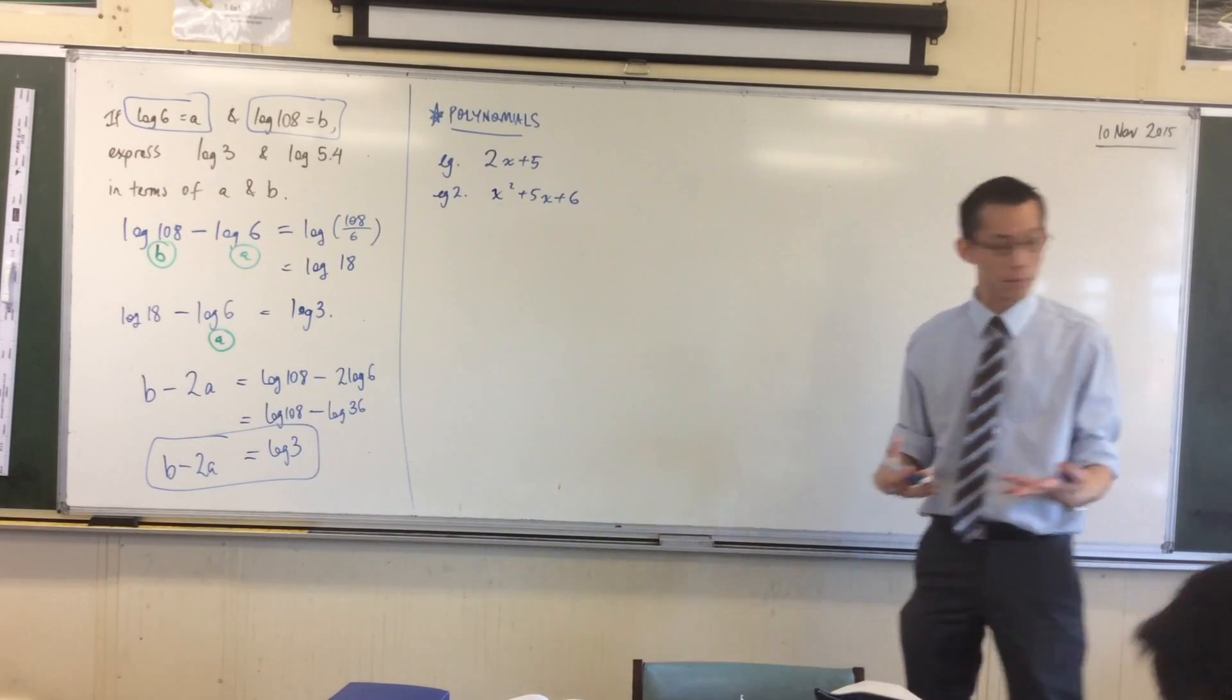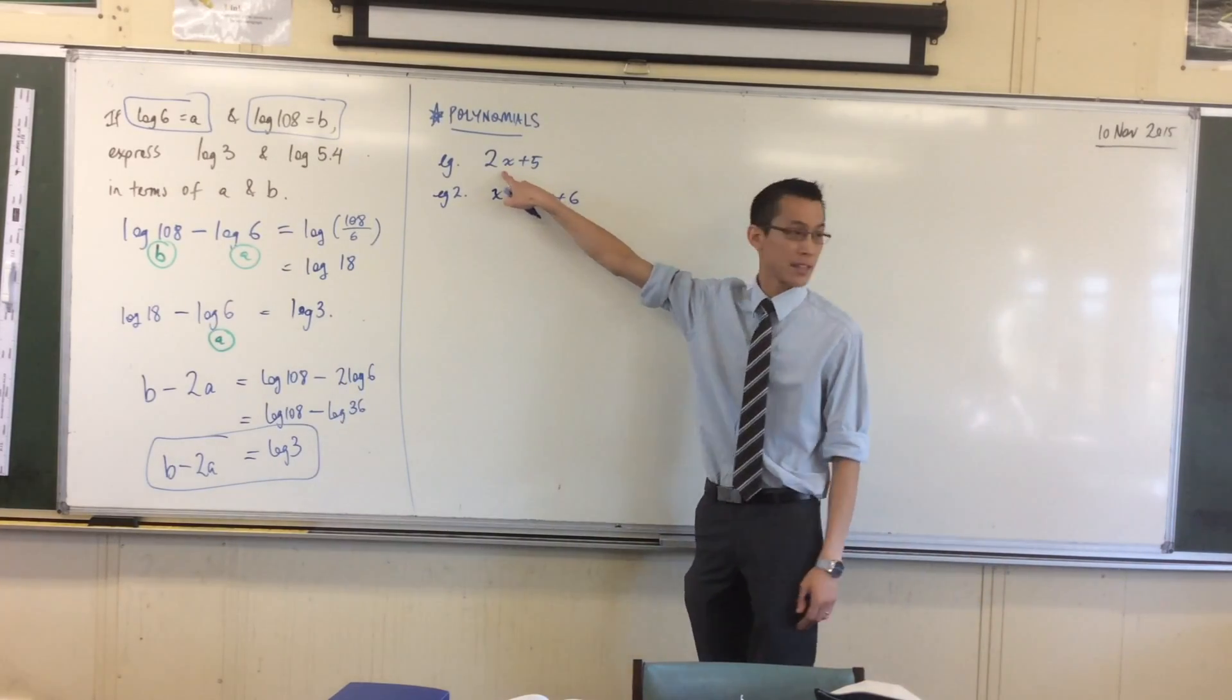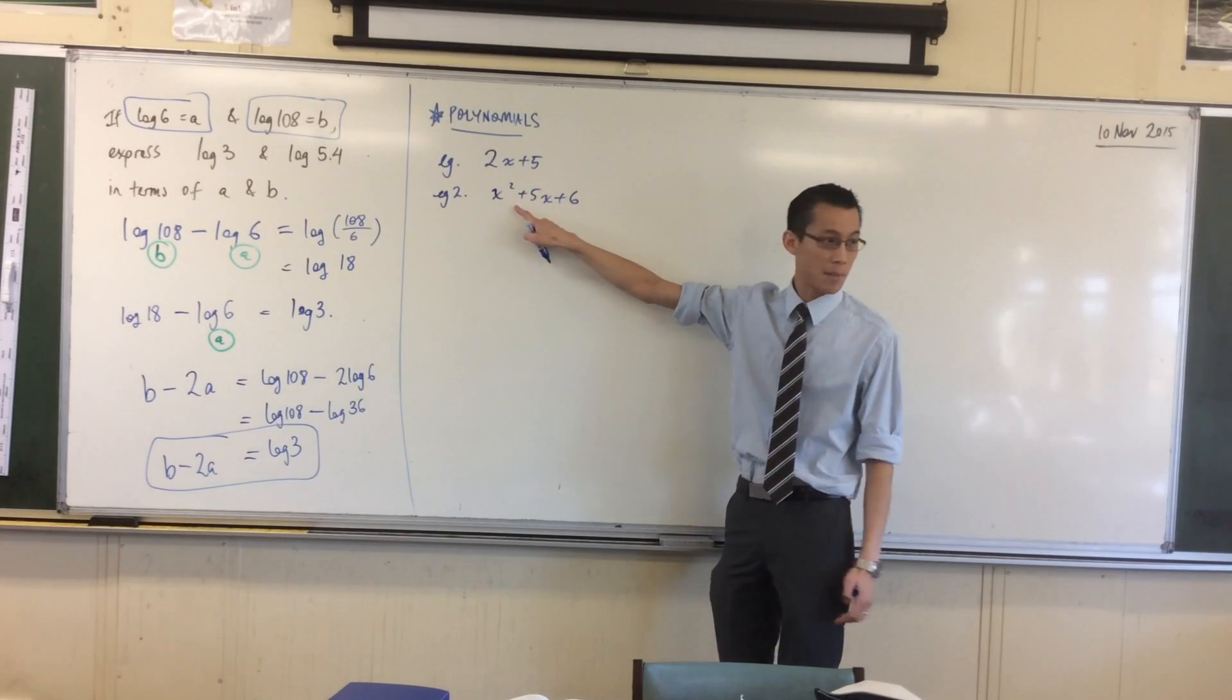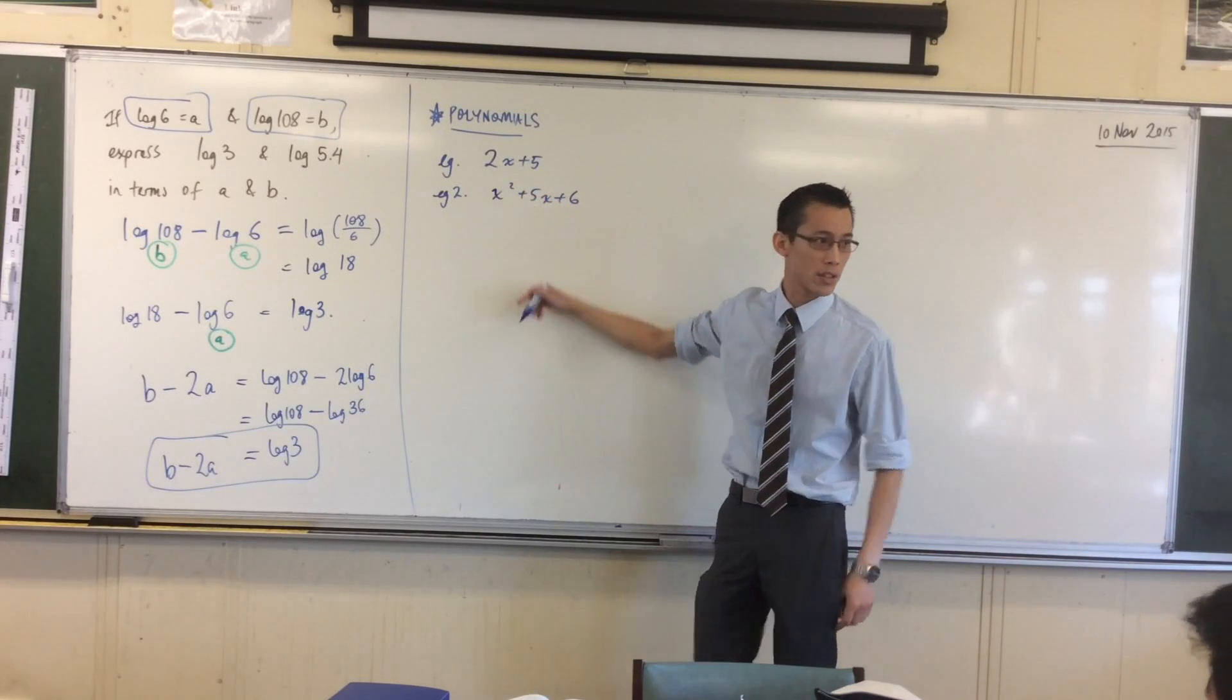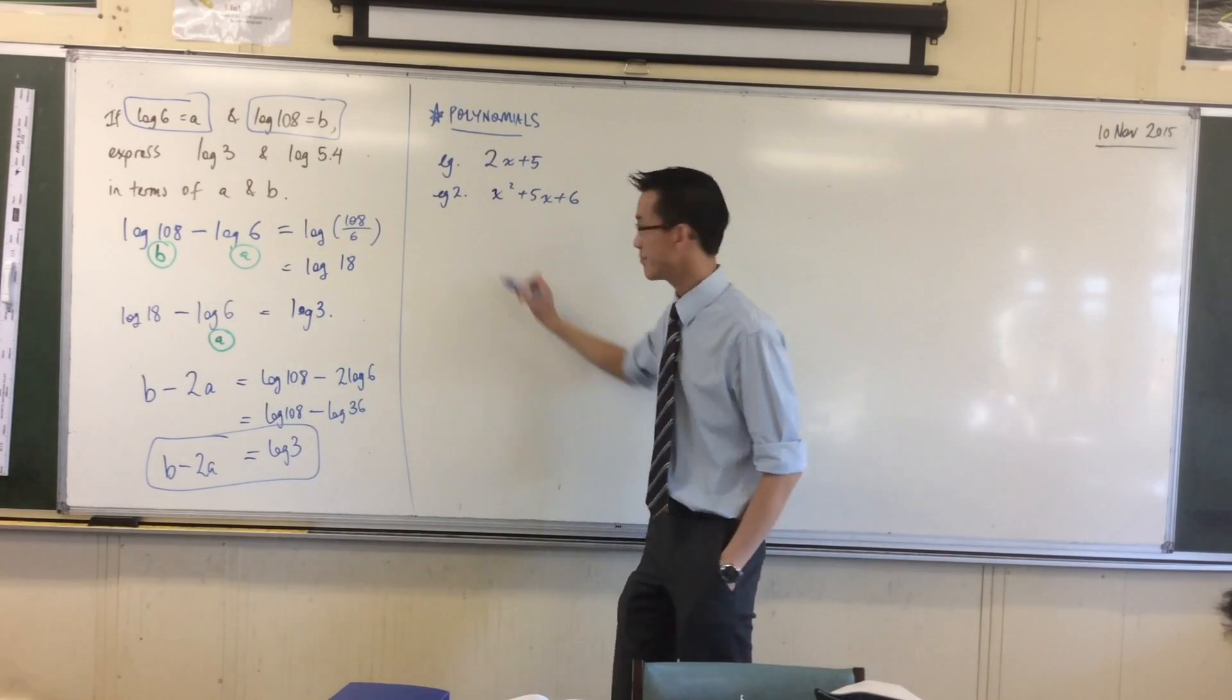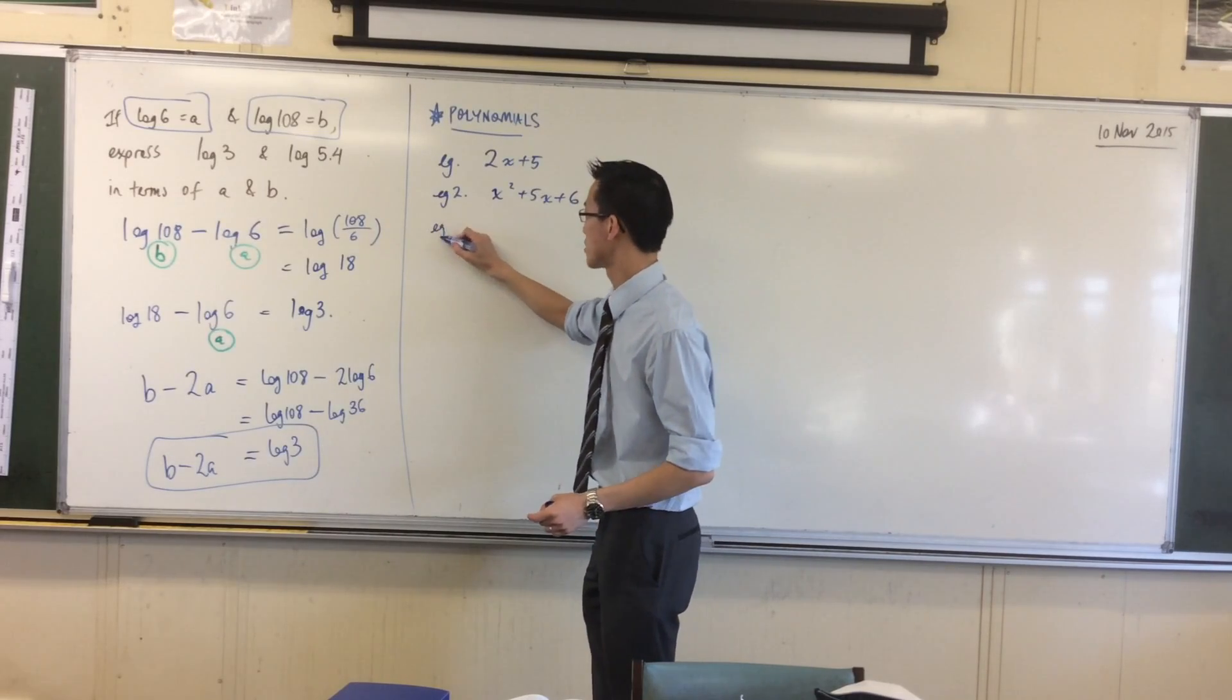You could push on this a little bit more. You can see I've got something to the power of 1, I've got something to the power of 2. What's it called when you've got something with the power of 3? It's called a cubic.